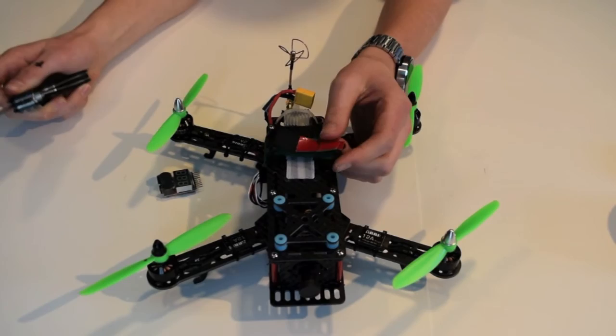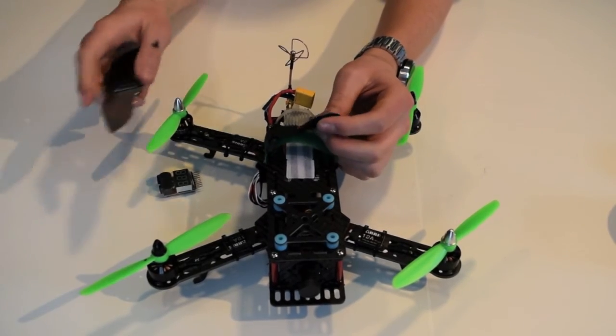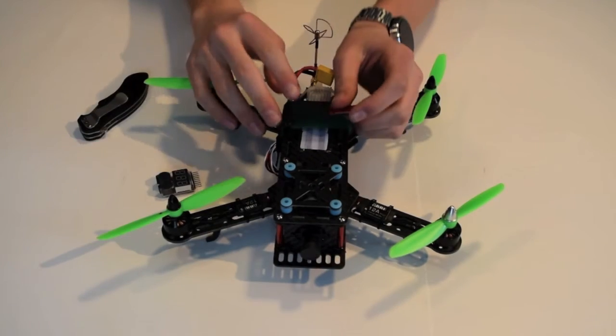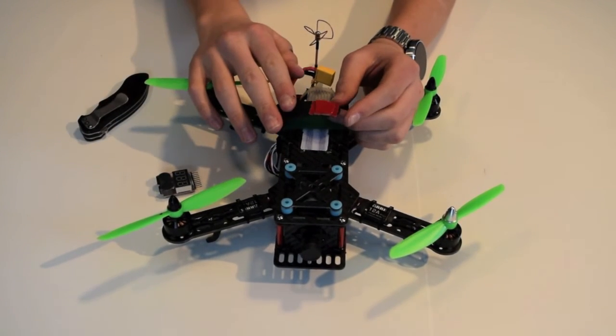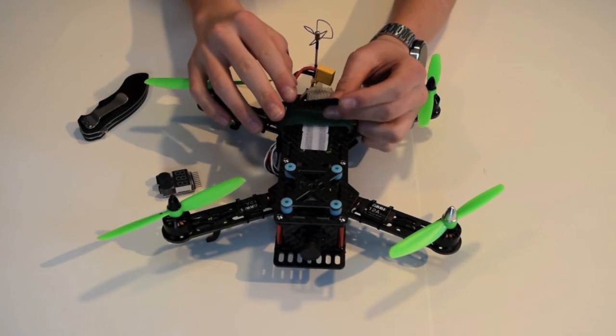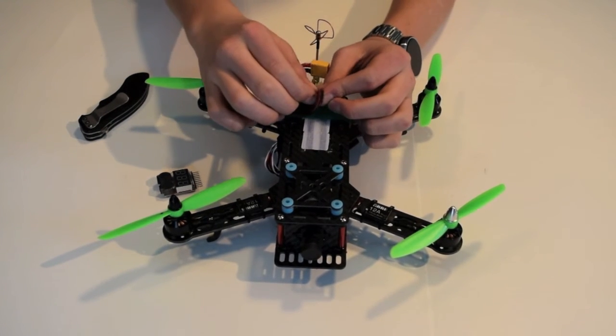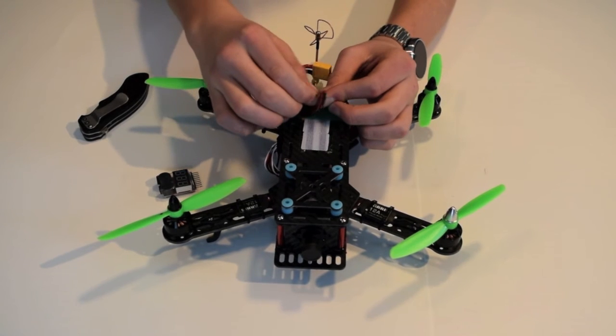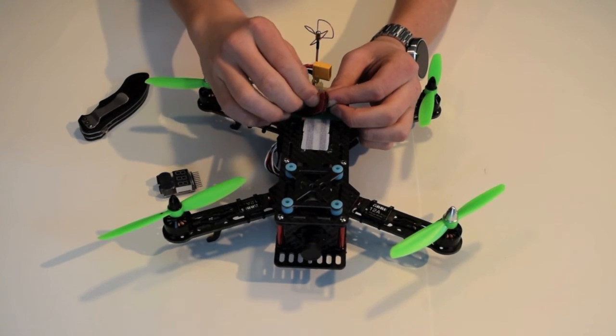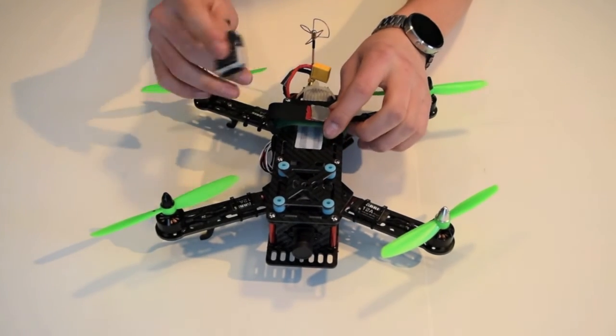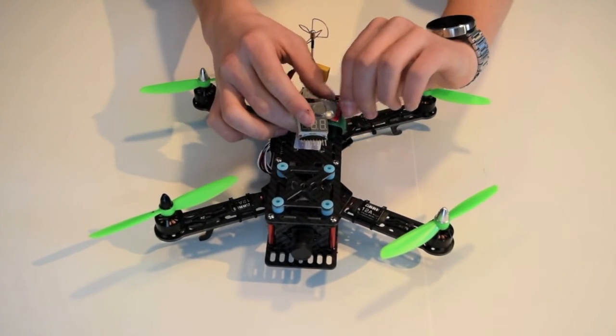So now, once you've got any extra tape that you don't want on there off, you can go ahead and peel off the red covering. Sometimes this can be a little tough to get. All right, I got the red part off and I'm going to actually mount this on here now.